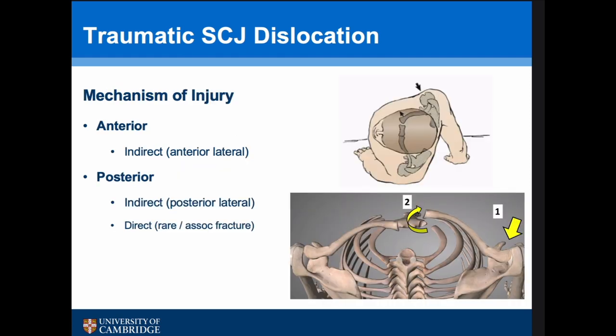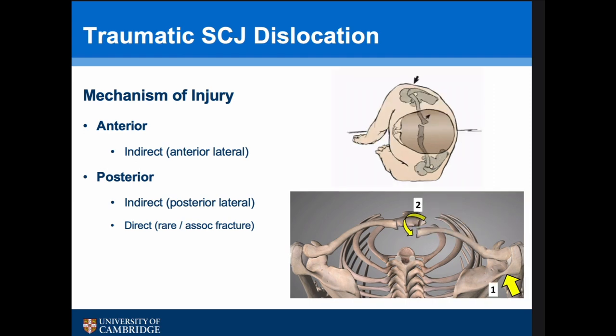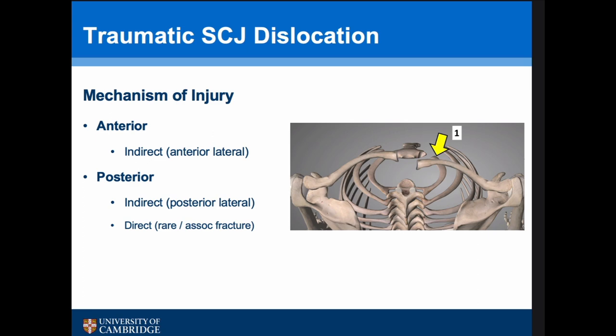The mechanism for an anterior dislocation is always indirect — a blow over the anterolateral aspect of the shoulder levers the clavicle out, dislocating the medial end anteriorly. Most posterior dislocations are also indirect — a blow on the posterolateral aspect of the shoulder, such as in a ruck or scrum, pushes the clavicle posteriorly. Occasionally a direct force onto the front of the clavicle causes posterior dislocation, but this is often associated with a fracture.